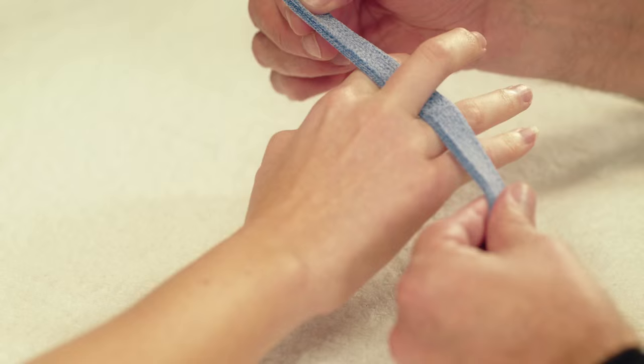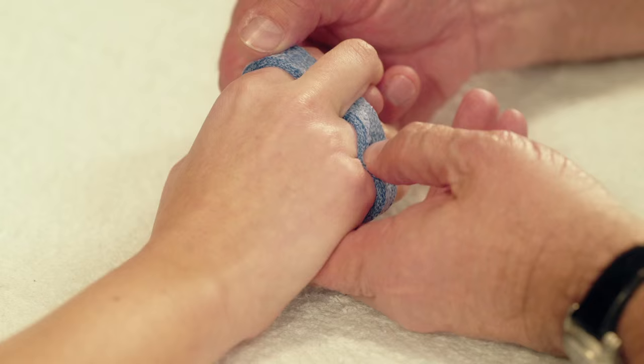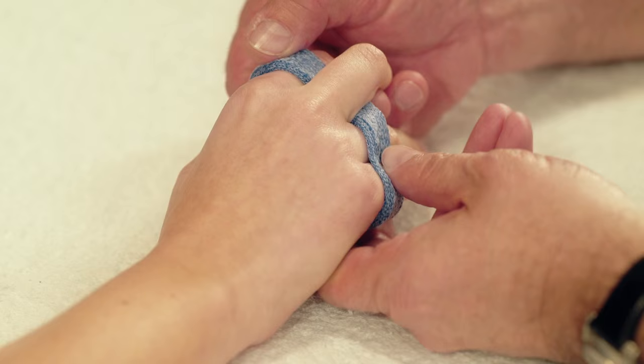Wrap the orthocast around the first phalanx of the middle finger. Wrap the edges of the orthosis towards the palmar side of the first phalanx of the index and little finger.